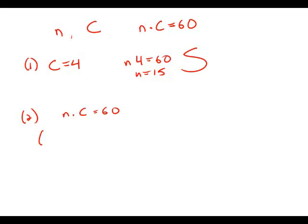Right now we have n times c equals 60. But if we have five fewer members, n minus 5, the share will go up by $2, c plus 2, and that will equal 60.